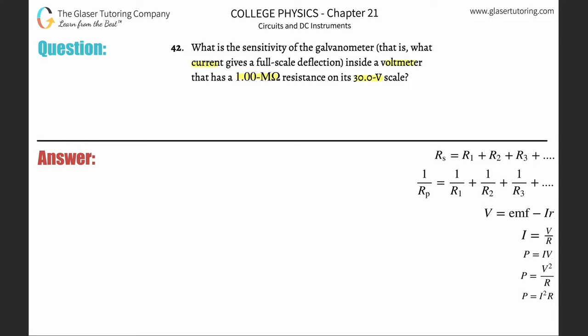It's simply asking what current is going to be supplied if there's 30 volts and 1 MΩ. So it's just Ohm's law: current will equal voltage divided by resistance.